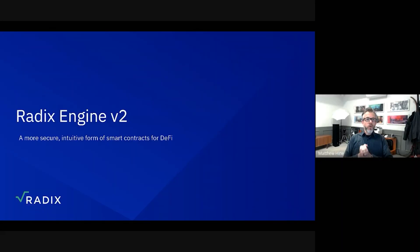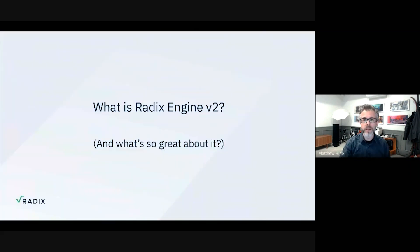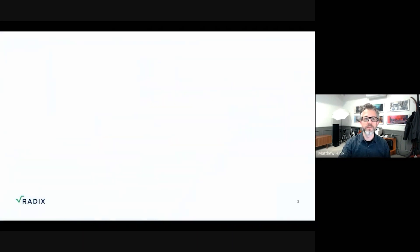Then in the second video that I'm going to do as a follow-on, this will talk in a little bit more detail about how exactly it works and what's so interesting about it. I'm going to get started here. Radix Engine V2 is a more secure, intuitive form of smart contracts intended for DeFi. The first part of the video I want to talk about is what exactly that is and what's so great about it.